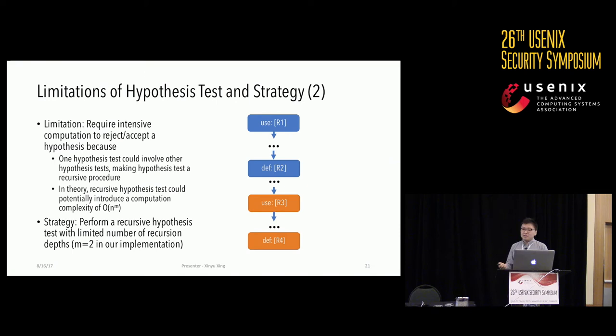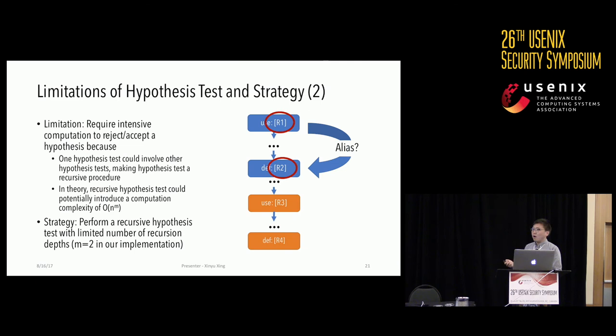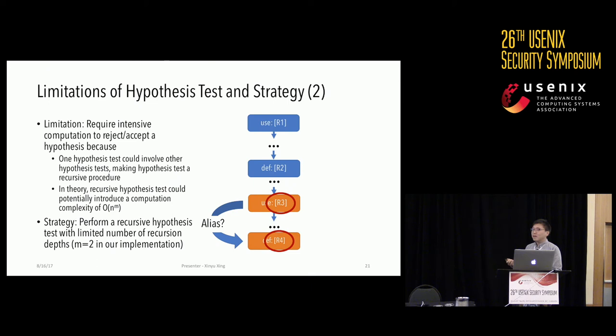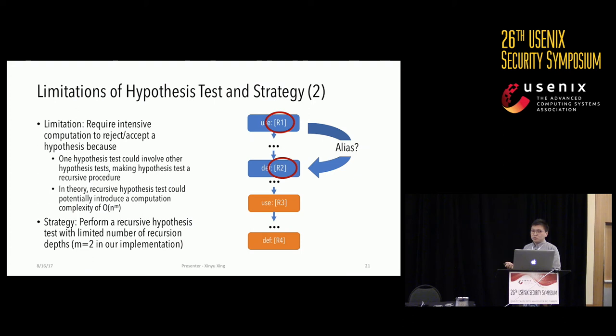Another limitation is the intensive computation of hypothesis testing. Sometimes we cannot do accurate data flow analysis without performing the actual hypothesis test first. For example, to determine whether R1 and R2 are aliases, we might have to first check R3 and R4; but to determine R3 and R4, we may need to check R1 and R2 first — this circular dependency is called hypothesis test dependency.